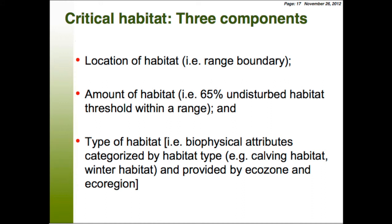There are three main aspects for critical habitat: location, amount, and type. Location refers to the range boundary — critical habitat is looked at at the range level, so we have 51 different ranges where we're assessing critical habitat within those range boundaries. Amount of habitat refers to the 65% undisturbed habitat threshold. Type of habitat refers to biophysical attributes by habitat type, since caribou may use different habitats at different times of year — for calving or in winter — and depending on the ecozone and eco-region, all broken down in an appendix in the recovery strategy.